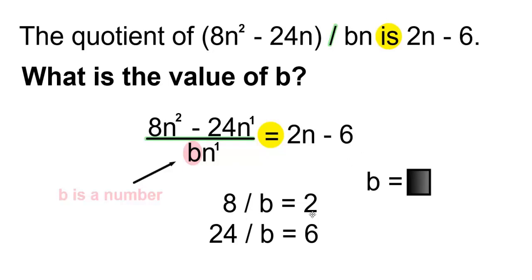So 8 divided by what number is equal to 2? 8 divided by 4 is equal to 2, and 24 divided by what number equals 6? 24 divided by 4 equals 6. Therefore, b will be equal to 4.